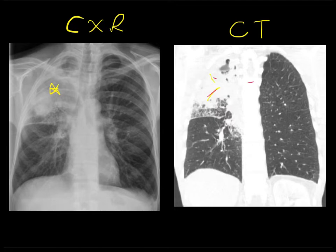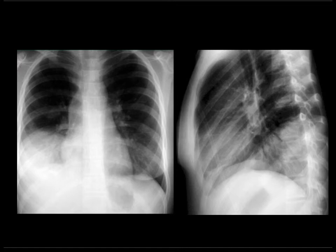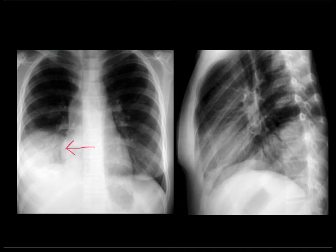Let's look again at the patient who had a right lower lobe pneumonia. Here's the area of consolidation in the right lower lobe. Notice how we can see the left hemidiaphragm very clearly, but we don't see the majority of the right hemidiaphragm — we've lost its silhouette, and that is the silhouette sign associated with a lower lobe pneumonia. On the lateral study, we see the left hemidiaphragm just fine, but only part of the right hemidiaphragm — part of it is lost due to the silhouette sign because of the consolidation abutting it, which is of the same density.